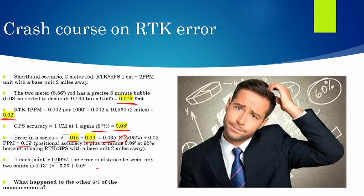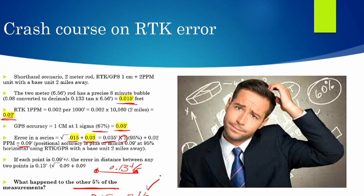Seven hundredths on one end of the line, seven hundredths on the other end of the line — or in this case I use nine hundredths. That means this line is plus or minus thirteen hundredths 95% of the time. So the question is, where are you when you get your other five percent? Conventional wisdom would say, well, if I'm within thirteen hundredths for 95%, then this is probably somewhere in the neighborhood of 15, 16 hundredths. Well, therein is the problem — no, it could be almost anywhere. Not feet, but certainly much more than a couple of three hundredths different from your bubble.